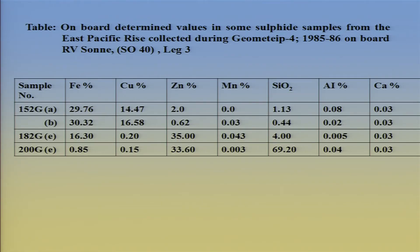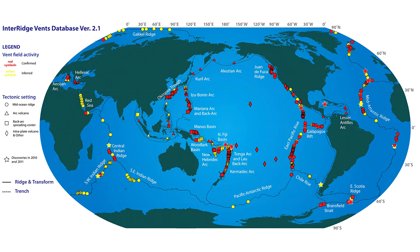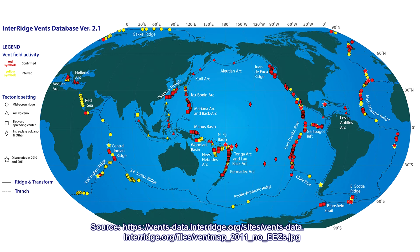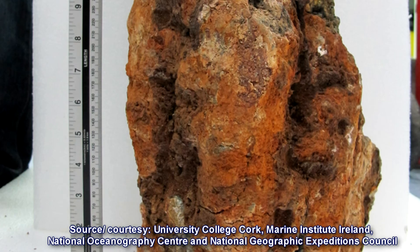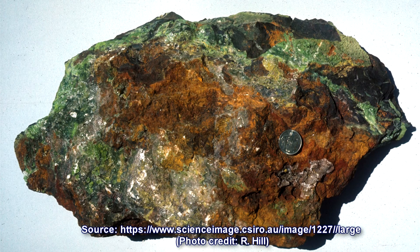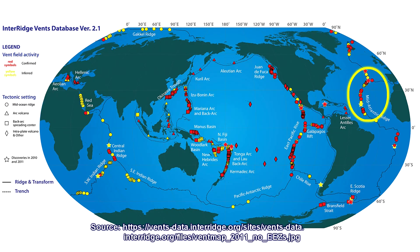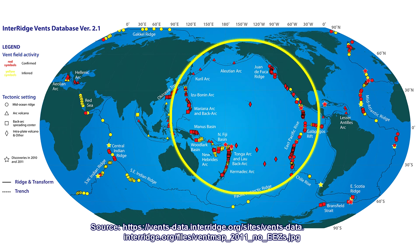In zinc we get silver associated, and similarly for copper we can expect gold associated with it. Looking at the ocean floor globally, in the Indian Ocean — which is our area of interest — there are reports from the mid-Indian Ocean ridge and a little south of it. Recently India has put a claim to explore for volcanogenic massive sulphide or polymetallic sulphide. More deposits are found on the mid-Atlantic ridge, on the extreme right of the slide, and in the Pacific Ocean on the East Pacific Rise.